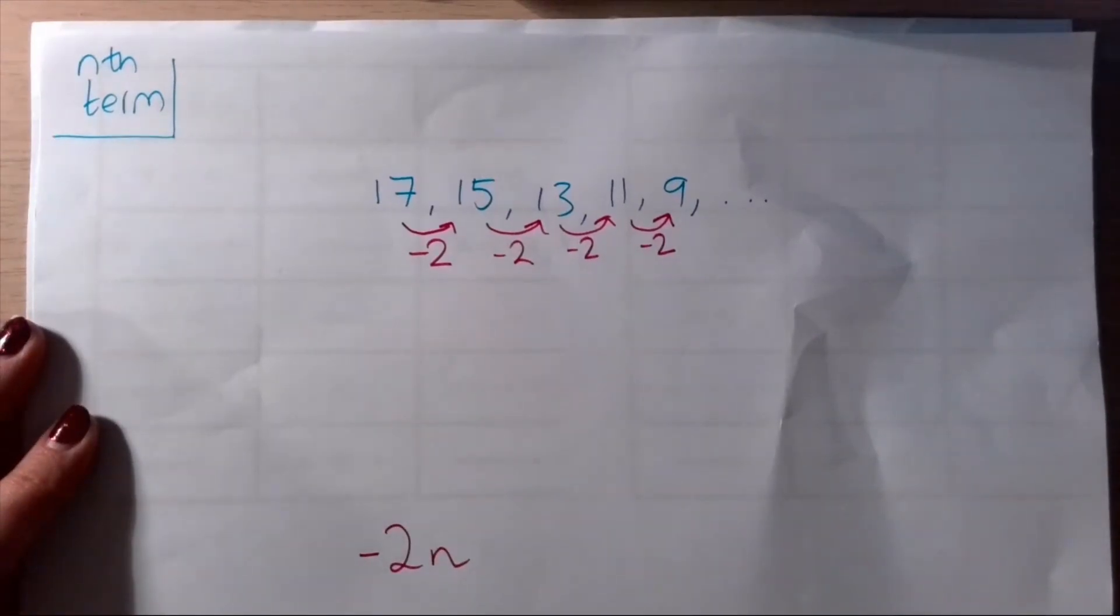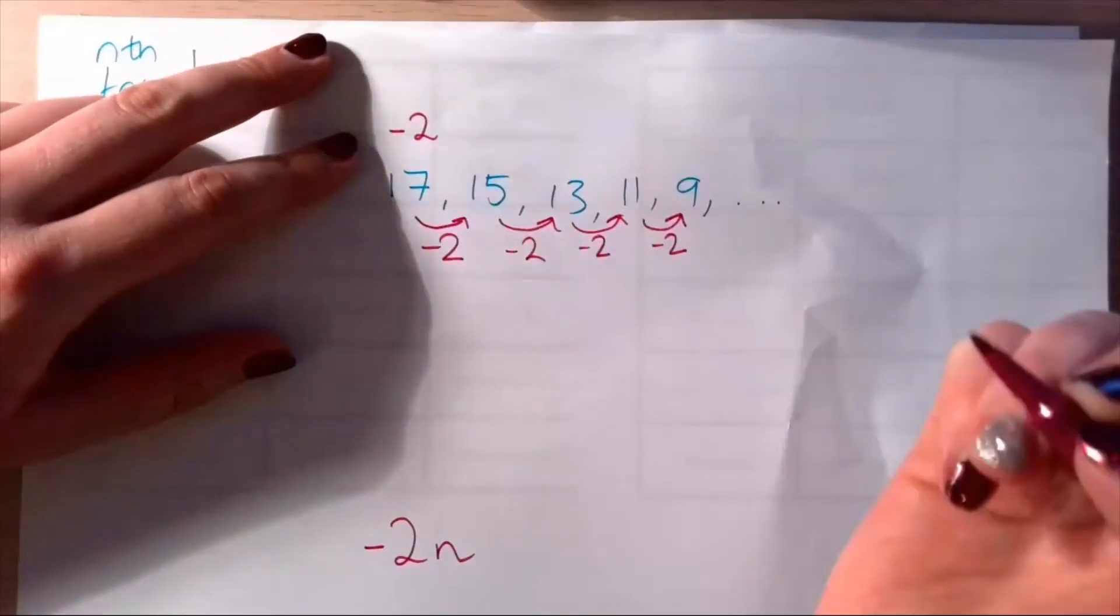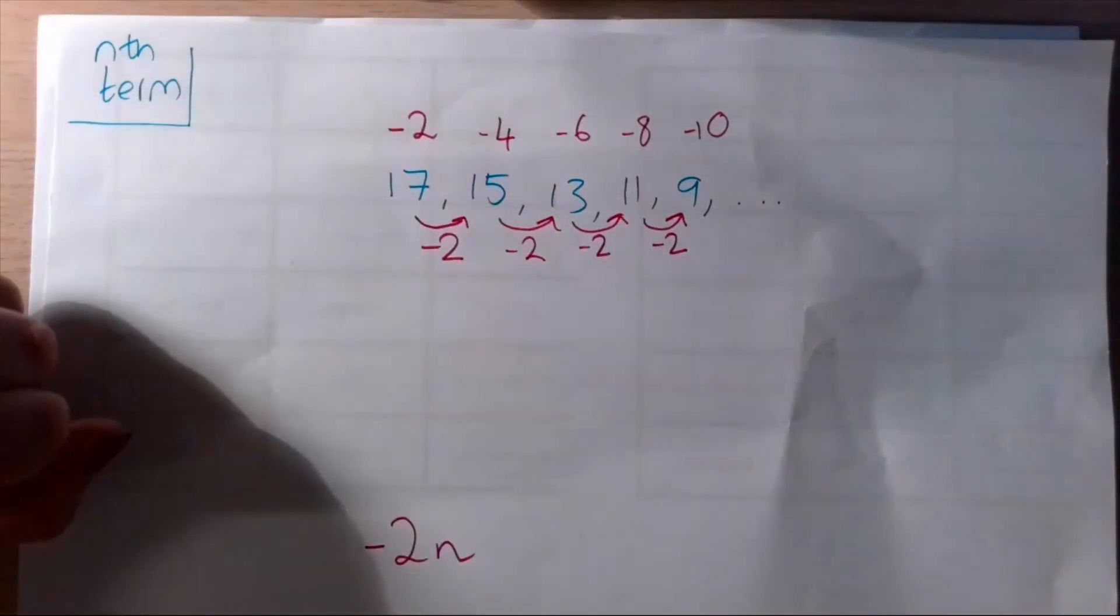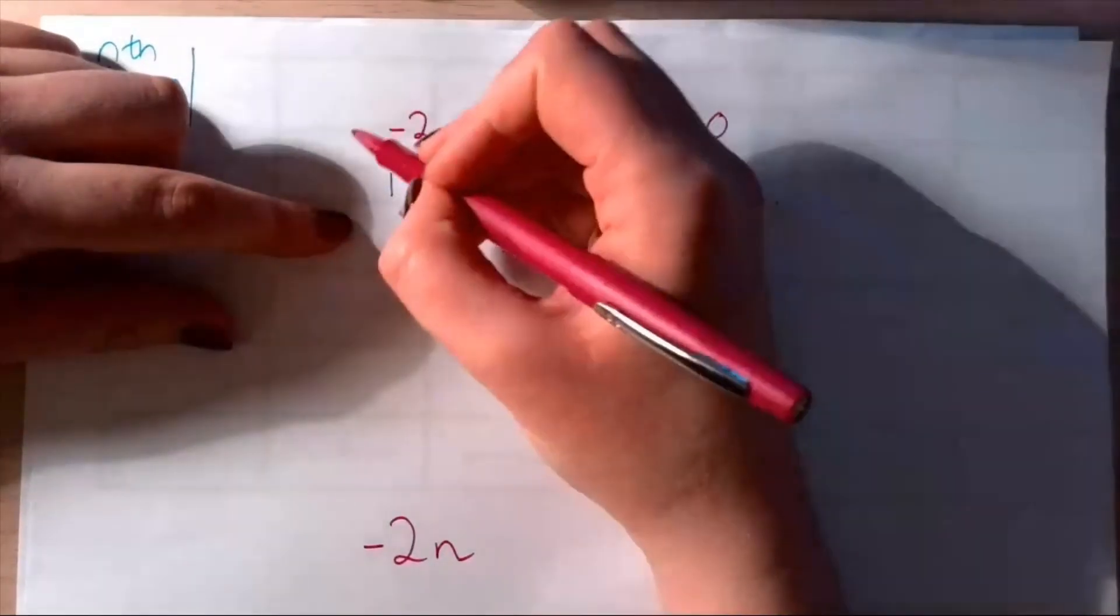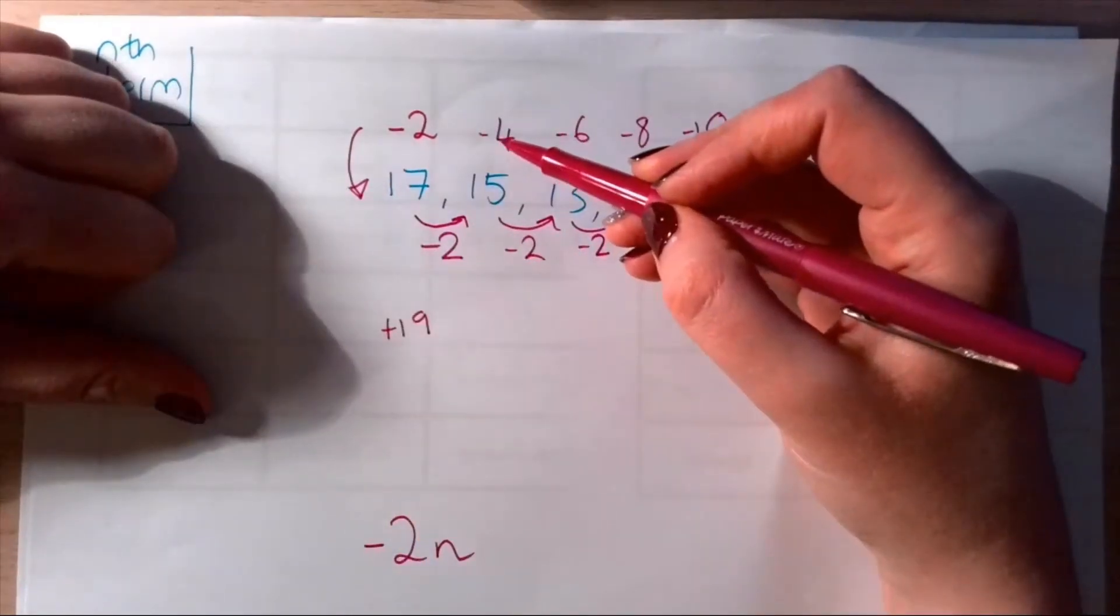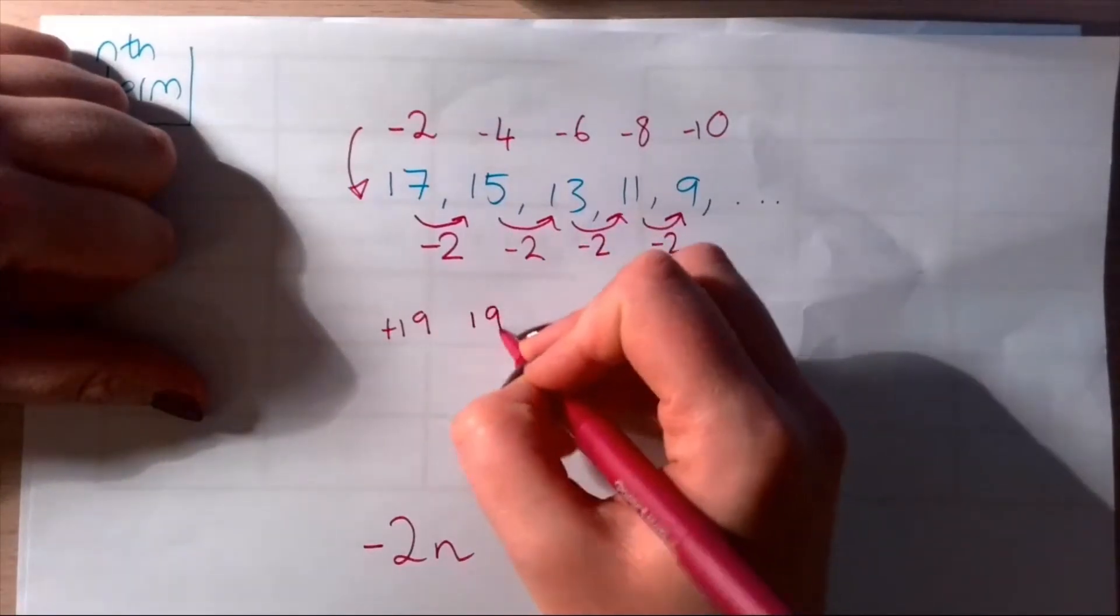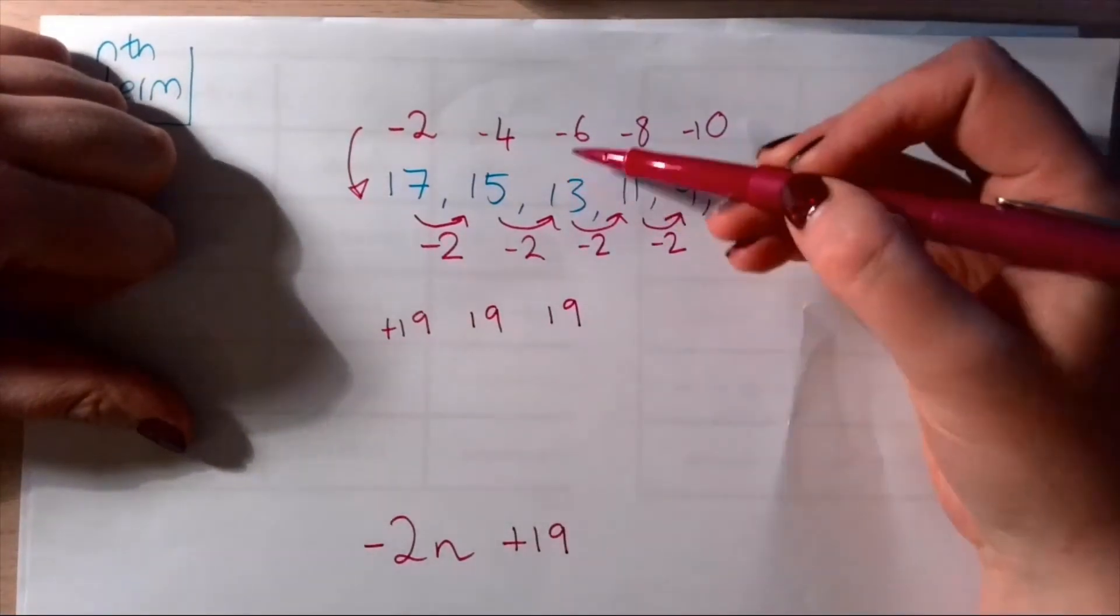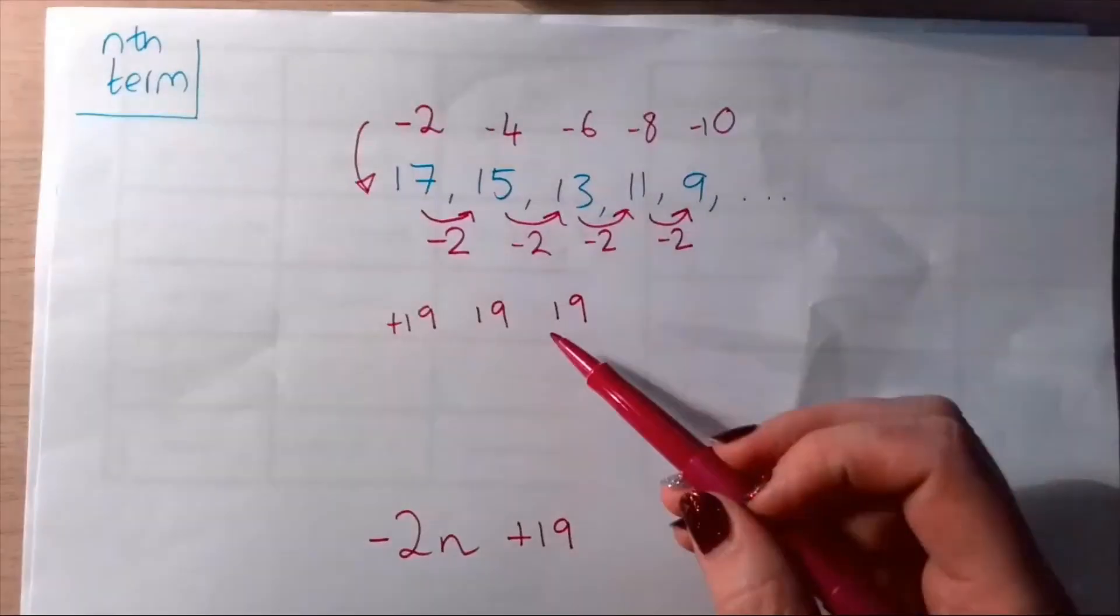The negative two times tables—first we're going to say negative 2n, that's the start of my answer. To write my negative two times tables above here, I'm going to write my two times tables but with negative signs in front: negative 2, negative 4, negative 6, negative 8, negative 10. That's the only thing that's massively different here. Now I need to see how I'm going to get from here to here. Negative 2 to 17, I'm actually adding 19. We always check: does it work for all of them? Negative 4 to 15, yeah, that's 19. Each time that's going to be 19. So we've got negative 2n plus 19.